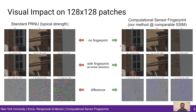We compare the visual impact of the fingerprints on the following figure. On the left-hand side, you can see the images with the PRNU fingerprint. On the right-hand side, you can see the images with the computational sensor fingerprint. You can see that there is no visible quality degradation. In the bottom row, we compare qualitative differences between the embedded patterns.